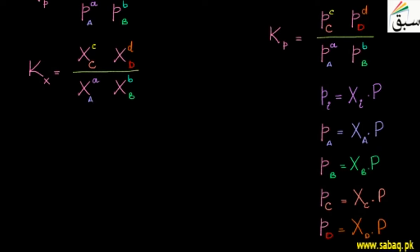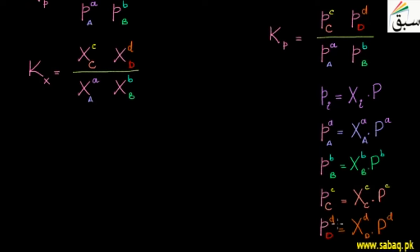We also note that the small partial pressures appearing in the Kp expression each carry powers. For A, the power is small a — so this power applies to both XA and P. For B, the power is small b — written on X and P accordingly. For C, the power is small c, and for D, the power is small d. So all powers a, b, c, and d are distributed to their respective mole fraction and pressure terms.